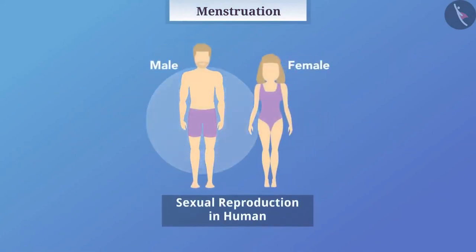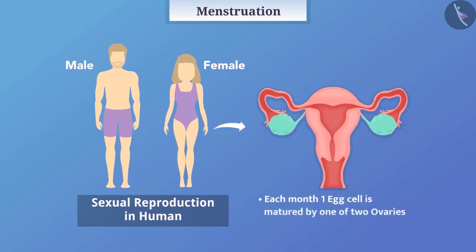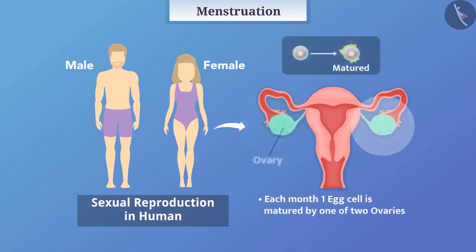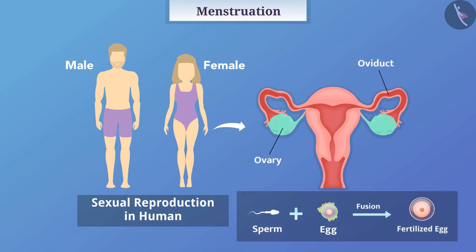Males and females participate in sexual reproduction. In human reproduction, each month one egg cell is matured by one of the two ovaries in the woman's body. If there is a fusion of sperm and egg in the oviduct, a fertilized egg is produced which is called zygote.